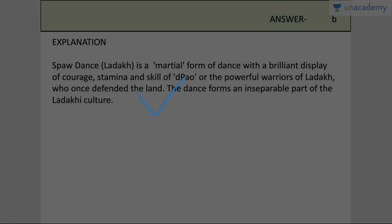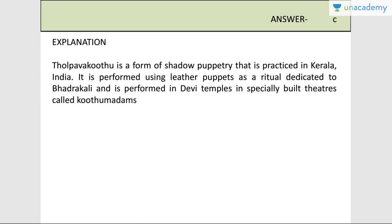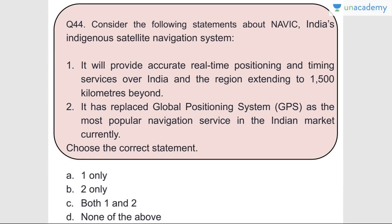Question number forty-three: Tholpavakoothu is a famous art form of Kerala that has been influenced by Kathakali dance. Tholpavakoothu is associated with which art form? It is associated with shadow puppetry. Answer is C. Shadow puppetry is practiced in Kerala using leather puppets as a ritual dedicated to Bhadrakali and is performed in Devi temples and specially built theaters called Koothu madams.